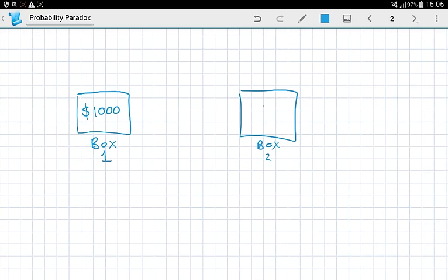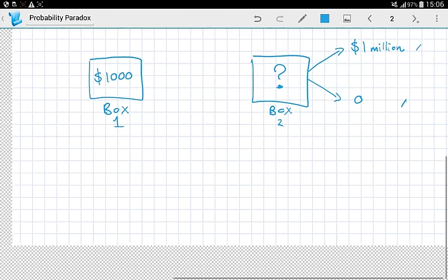In box two, well, box two is closed. So, you're actually not sure what exactly is inside. But the game show host tells you that there is either one million US dollars inside or there's nothing at all. Now, he doesn't give us the probability of whether it's a million or whether it's zero. But what he does is he gives us the following choices.